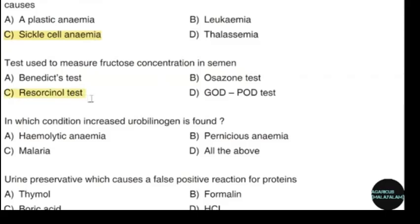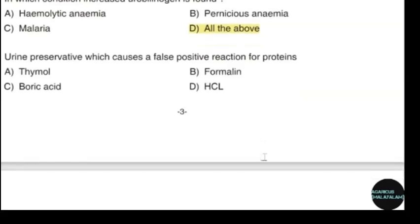Resorcinol test is used for fructose. In which condition is increased urobilinogen found? Correct answer: option D — All of the above. Urine preservative which causes a false positive reaction for proteins. Correct answer: option A — Thymol.